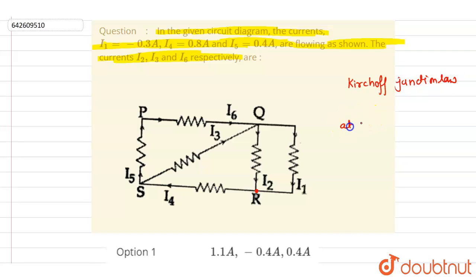At R, if you see, i1 plus i2 will be equal to i4. So i1 here is 0.3 and i2 we want to get, and it will be equal to i4.